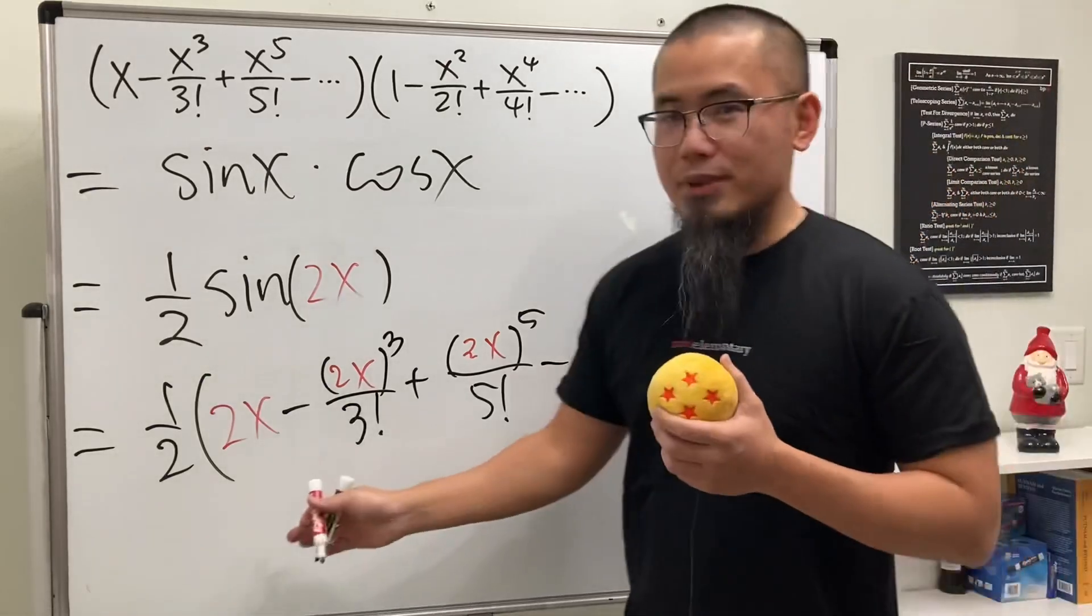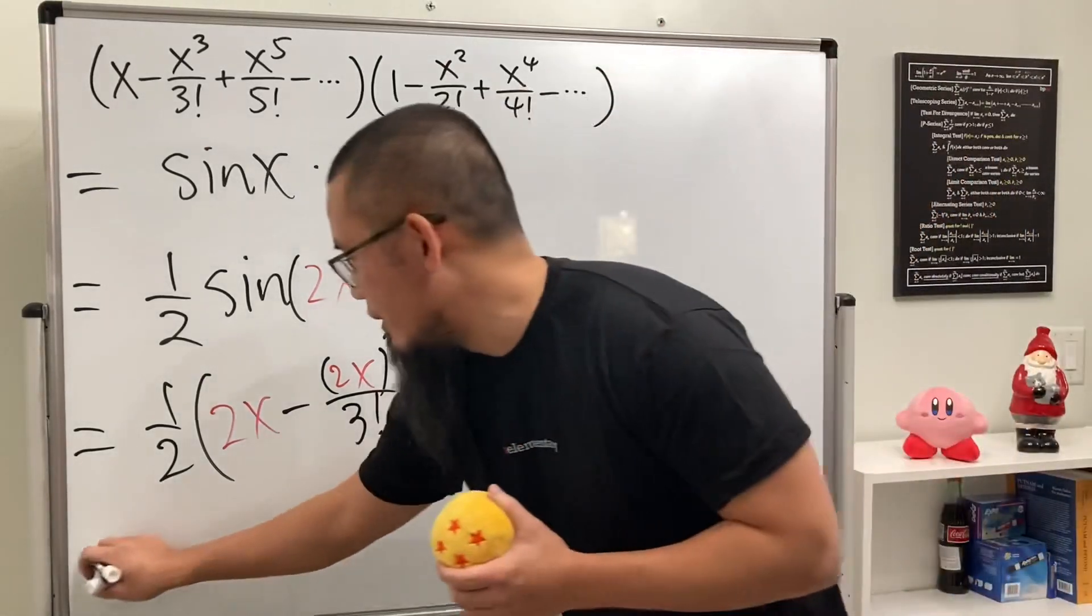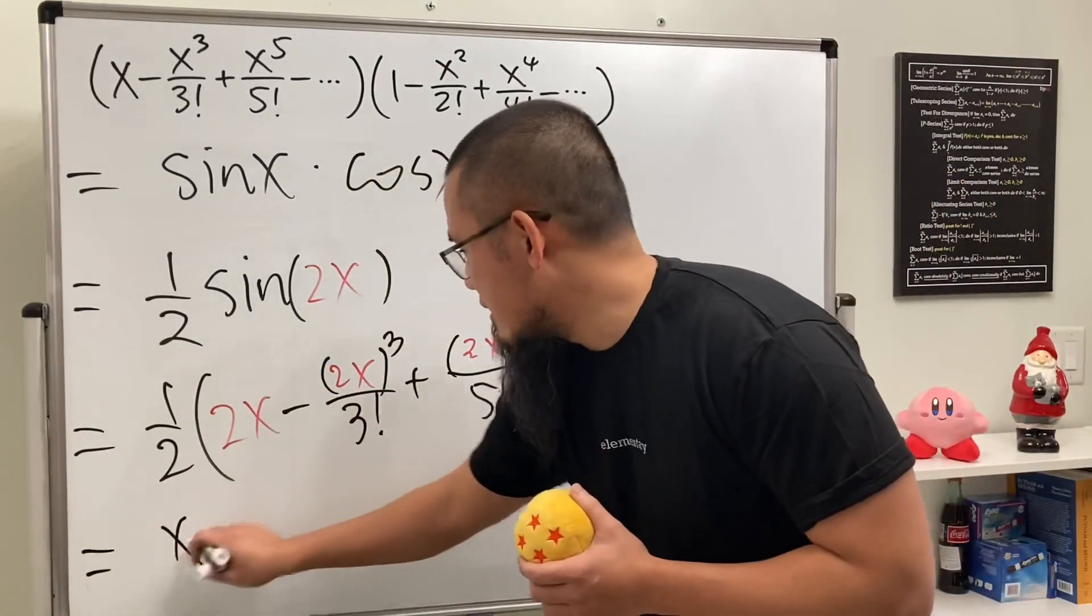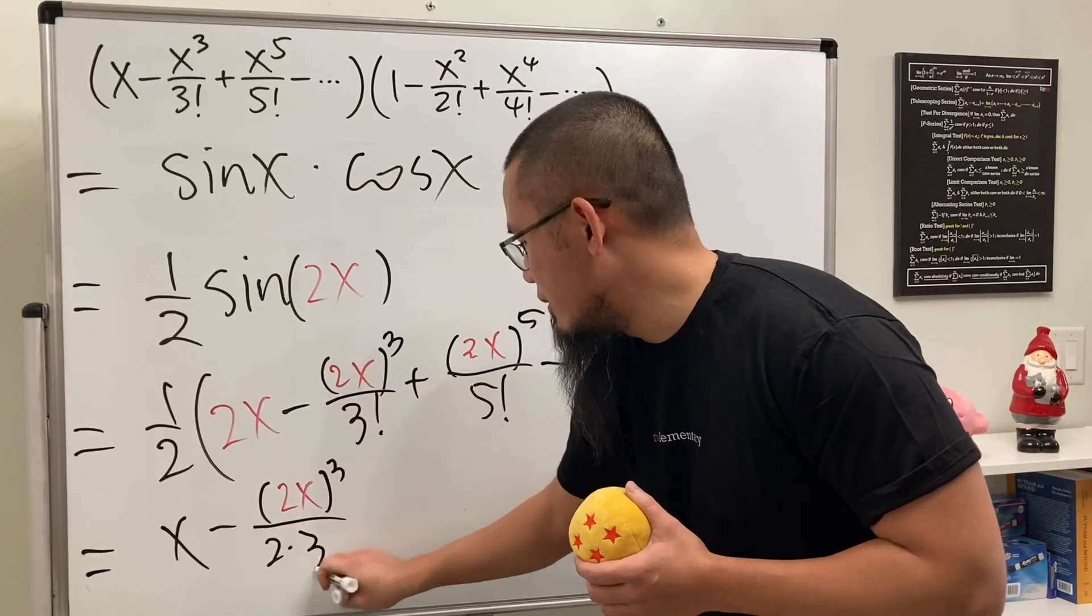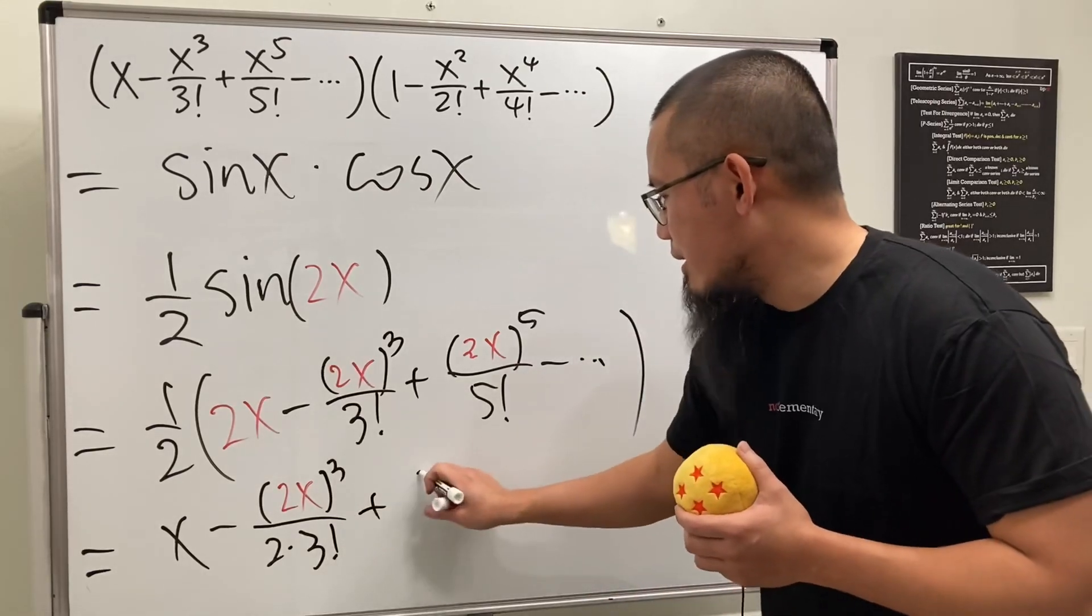And you know what? I'm not going to distribute this. Maybe I will distribute it. So multiply this. I will get x minus parentheses 2x to the third power over 2 times 3 factorial. And then we add. This right here is 2.